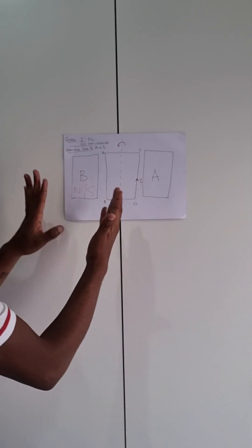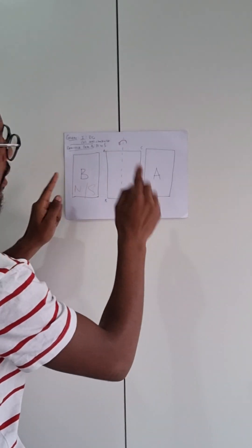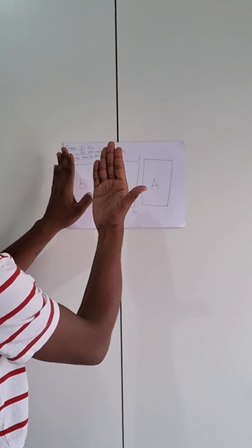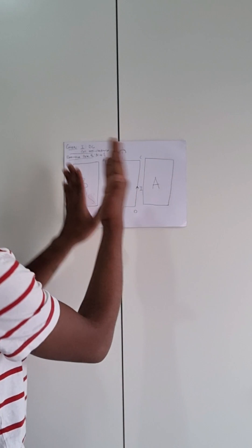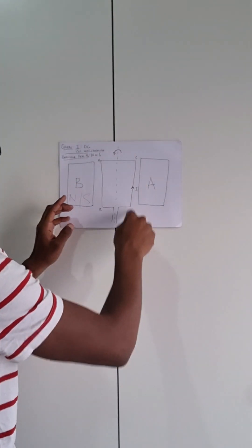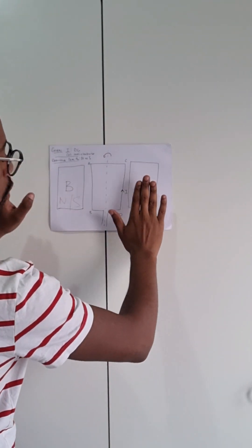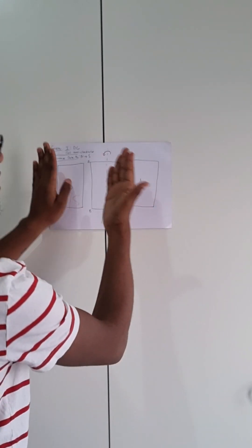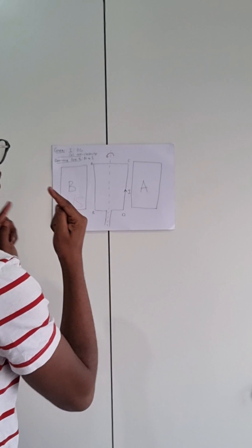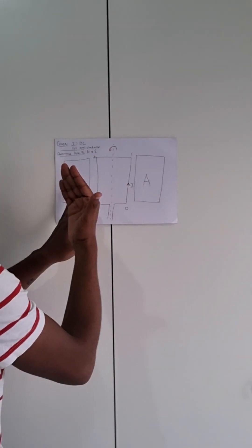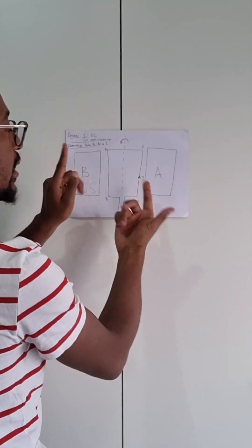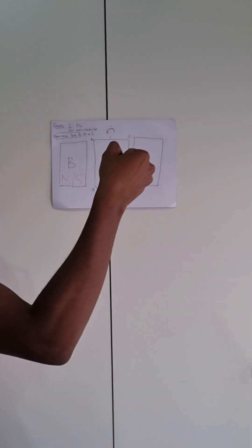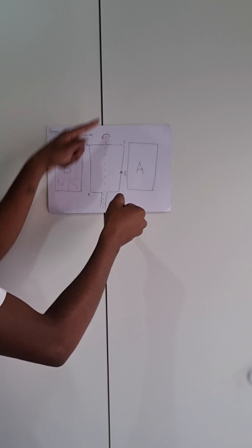When the coil moves anti-clockwise, the DC side will move upwards and the AB side will move downwards. If it were the other way — DC moving downwards and AB moving upwards — that would be clockwise. Since the coil is anti-clockwise, the DC side comes up. So the current is into the page and the DC side moves upwards.